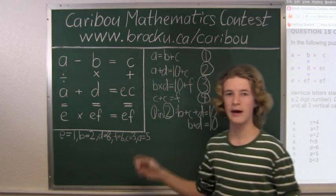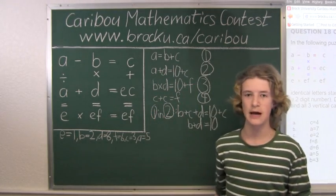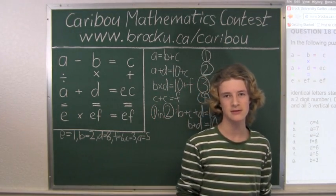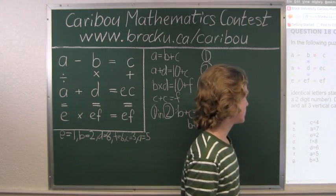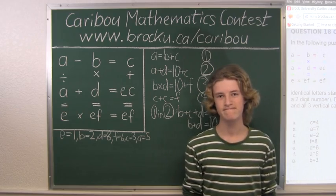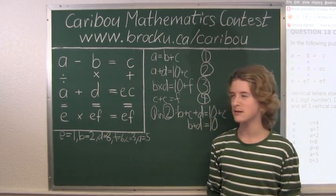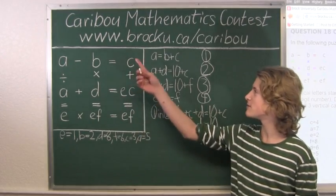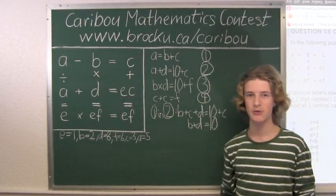So now we have all the values for all these variables, so now we would just look at the possible answers to see what is correct. So the answer would be F, A equals 5. If you'd like to know more about this contest, please feel free to visit our website at www.brocku.ca/caribou.